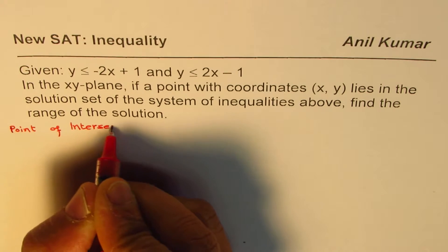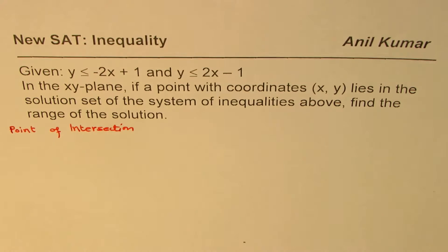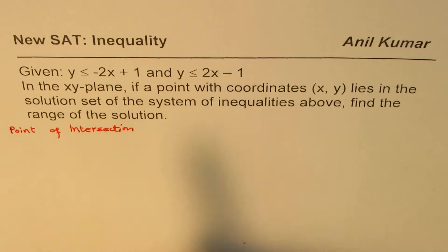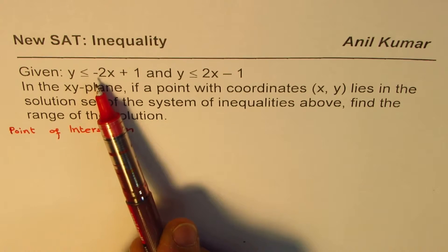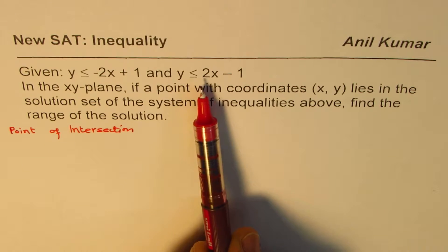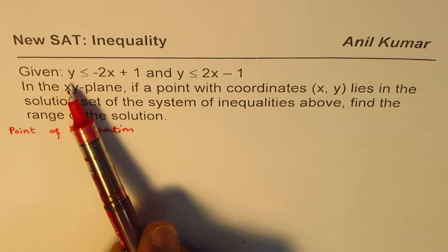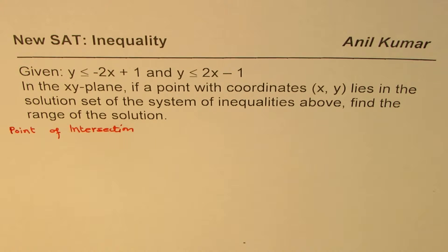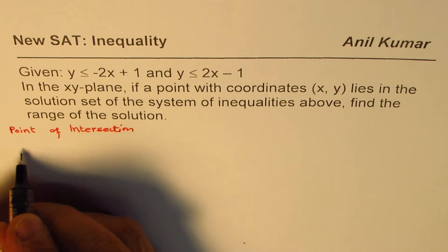Both lines are not parallel and not perpendicular either. You'll observe that one slope is -2 and the other is 2. When you multiply them you get -4, not -1, so they are not negative reciprocals and therefore not perpendicular. These are two different lines — one with a negative slope and one with a positive slope — and we are looking for values on the lower side of each line.